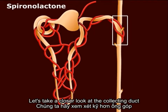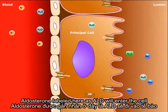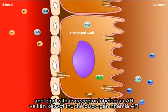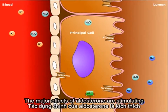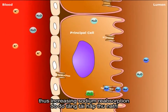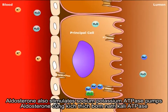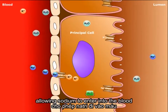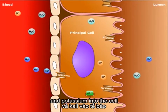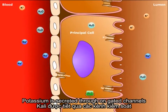Let's take a closer look at the collecting duct, which is the main site of action for aldosterone. Aldosterone, labeled here as ALD, will enter the cell and bind with its receptor, labeled as AR. The major effects of aldosterone are stimulating epithelial sodium channels, thus increasing sodium reabsorption and creating a negative electrical potential within the lumen. Aldosterone also stimulates sodium-potassium ATPase pumps, allowing sodium to enter the blood and potassium into the cell. Due to the negative electrical potential within the lumen, potassium is secreted through ungated channels.